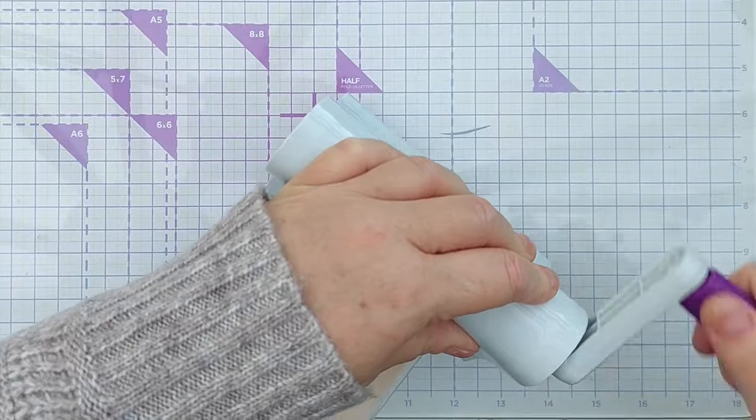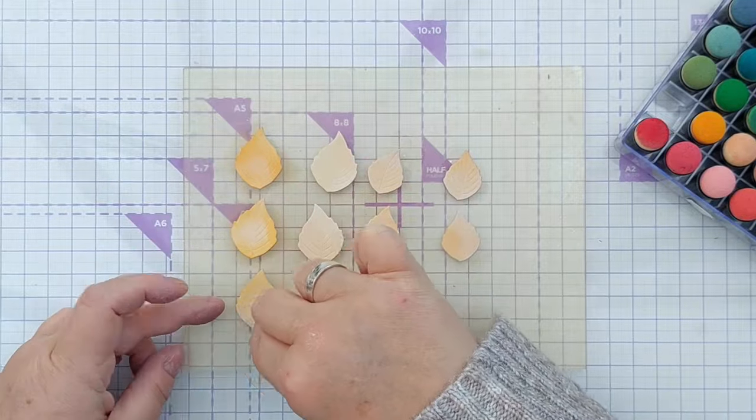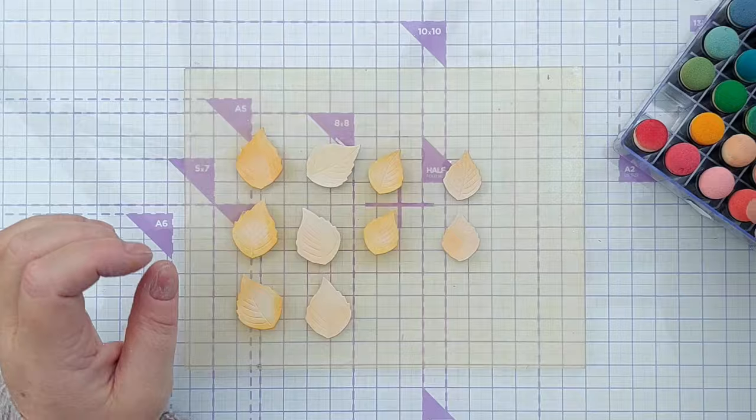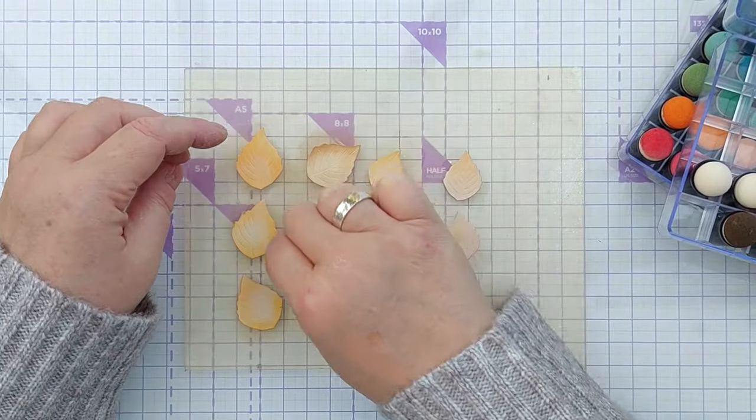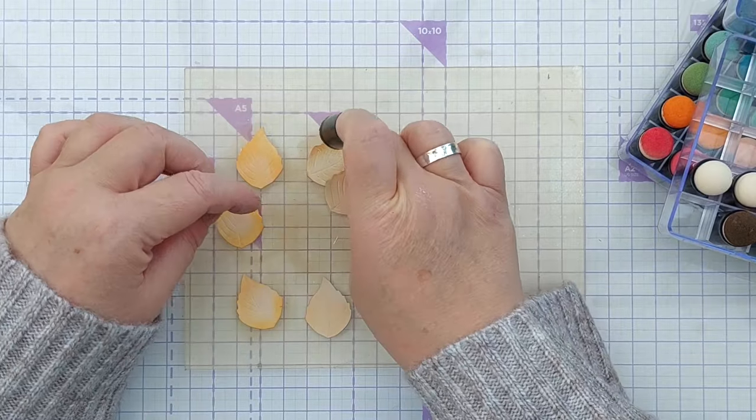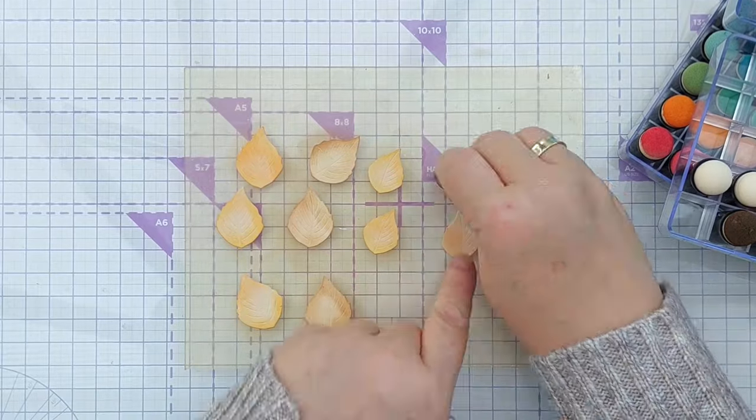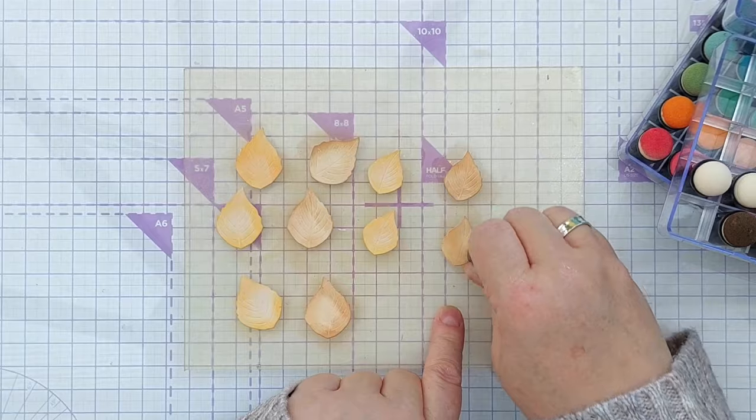I put my leaves on my photopolymer grip mat and then used sponge finger daubers to add some ink around the edges, again for variation. On half the leaves I used spiced marmalade, which is a stronger deeper orange, and on the other half of the leaves I used vintage photo, which is a nice warm brown. So these leaves are clearly autumnal fall leaves.